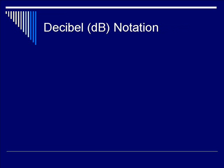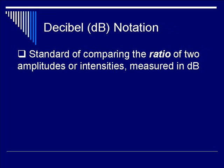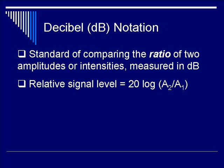Let's discuss the decibel notation. Decibels are used frequently in audio analysis. Decibels is the standard for comparing the ratios of two amplitudes or intensities, measured in dB. For example, you have an incoming signal A1 and an outgoing signal A2. The relative increase or decrease of this signal level is defined as 20 times the logarithm of A2 over A1, where A2 is the output and A1 is the input.